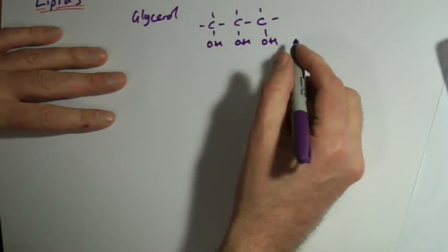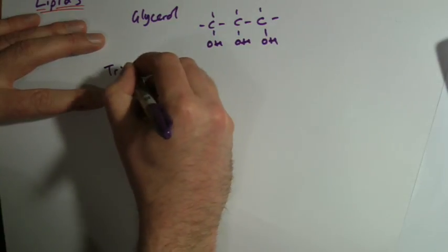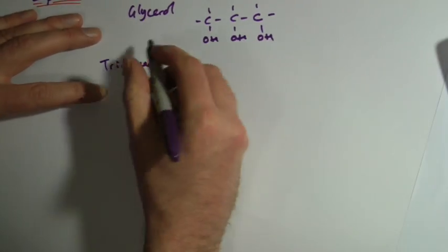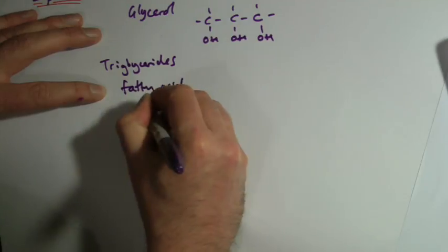Now, in the case of lipid, we could also call these things triglycerides, tri meaning three. Basically you get three fatty acid chains attached.